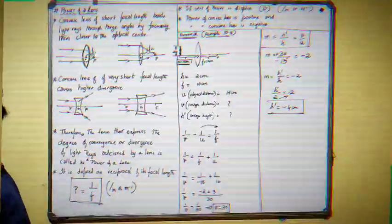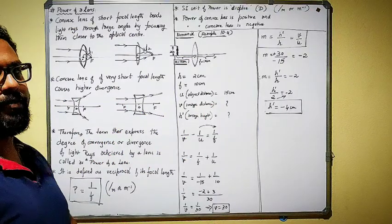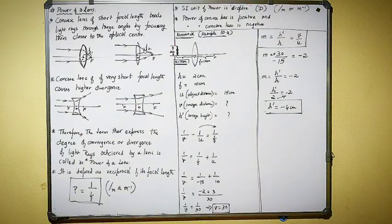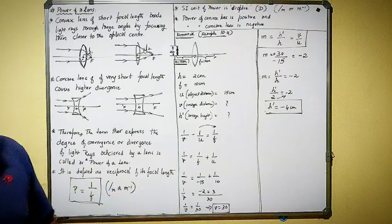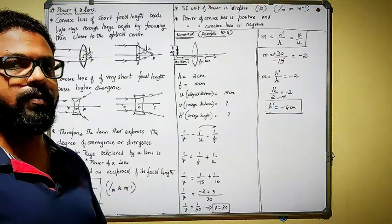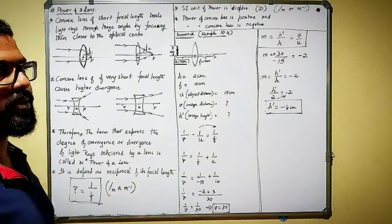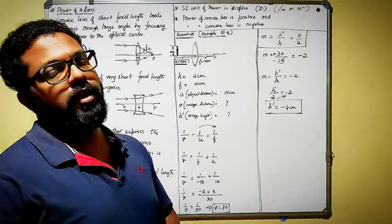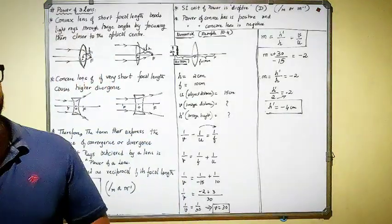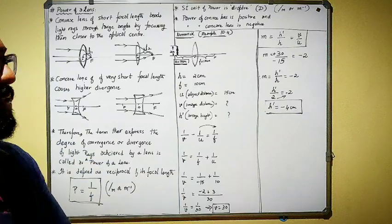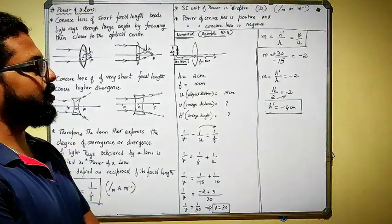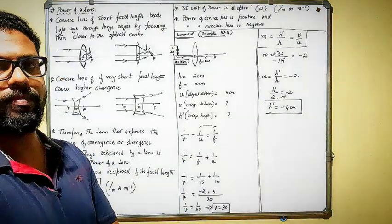So here we are at the last topic of this particular chapter — Light, Refraction and Reflection. We will complete this, solve a numerical, and you will have to complete the full exercise of this chapter in your textbook. For those who don't have the textbook, I will send you a PDF copy. Please finish the exercise and then we will move on to the next chapter.